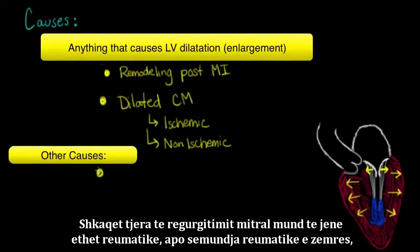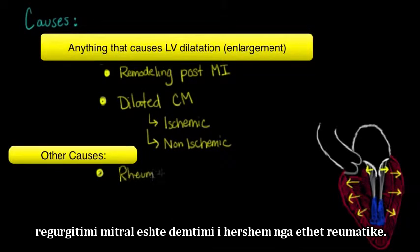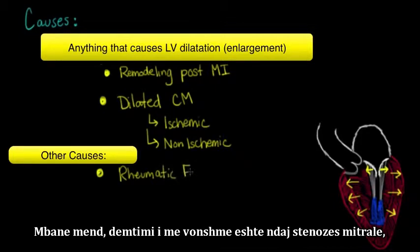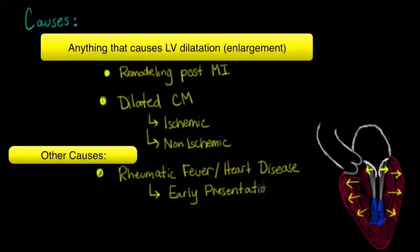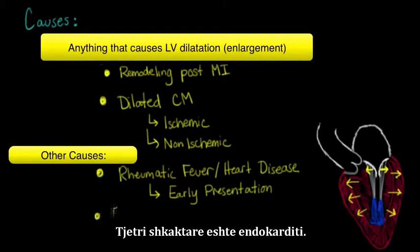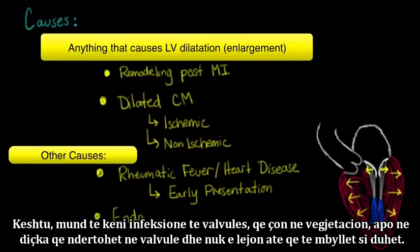Another cause of mitral regurgitation is rheumatic fever or rheumatic heart disease. Mitral regurgitation is actually the early lesion of rheumatic fever. Remember that the later lesion is mitral stenosis, which occurs after multiple bouts of rheumatic fever. Another cause is endocarditis — an infection of the valves leading to a vegetation that builds up on the valve and doesn't allow it to close effectively.